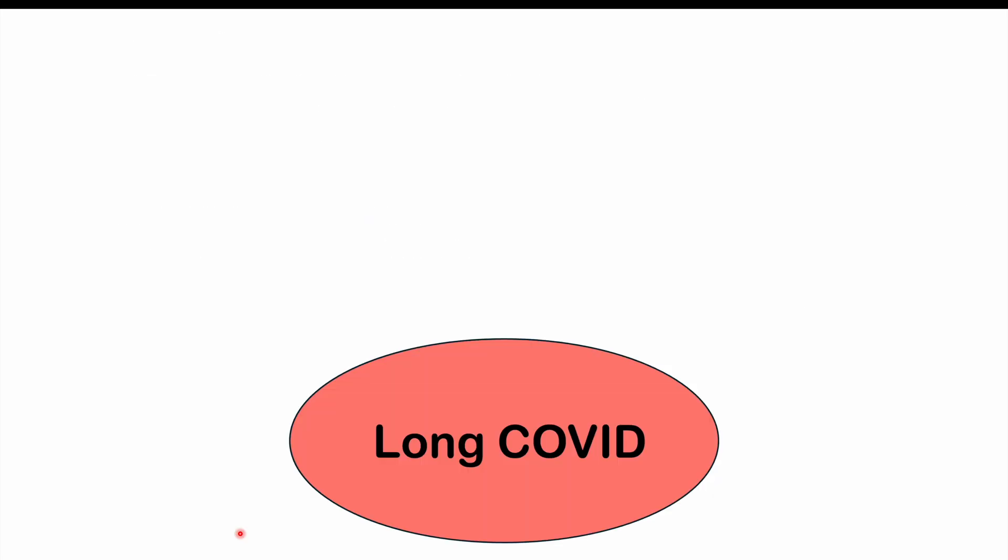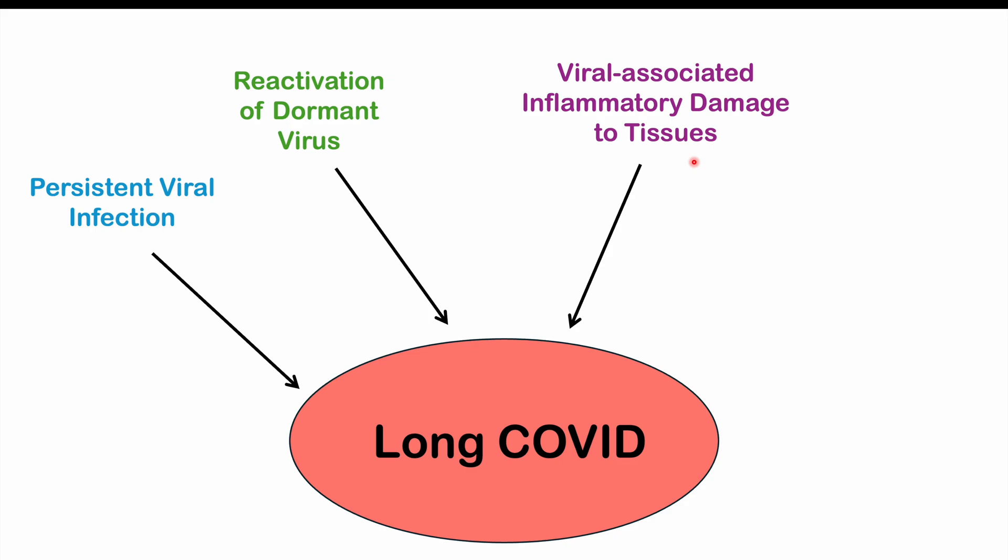Now the reason as to why younger female patients who are non-pregnant are more likely to get Long COVID is not entirely understood. There are at least several different hypotheses as to why this may be playing a role. Some of these include persistent viral infection, reactivation of a dormant virus, something like herpes virus, viral-associated inflammatory damage to tissues, and also autoimmunity.